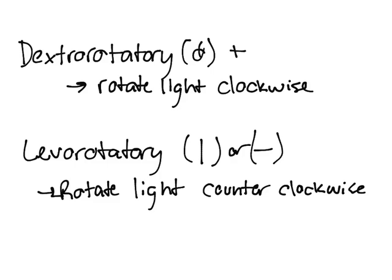You might ask, what happens if you put a compound that's not chiral into the polarimeter, or the thing that you use to see how much light is rotated?